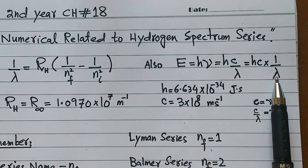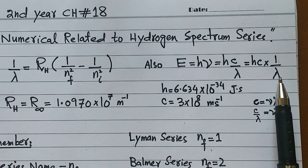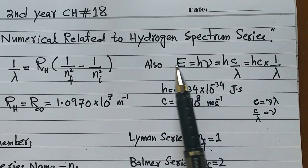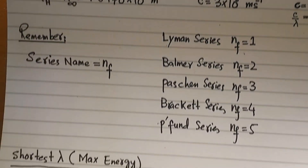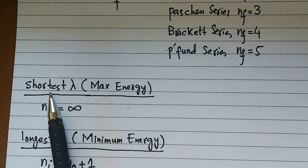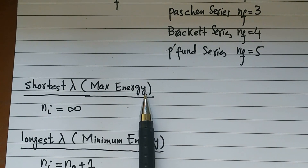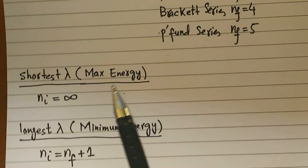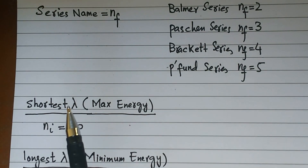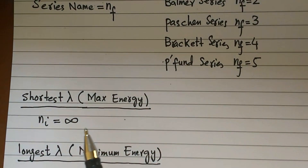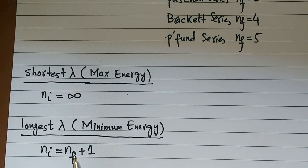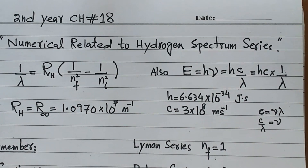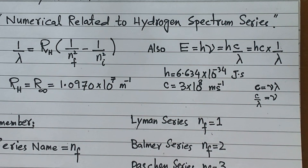From the equation, energy and wavelength have an inverse relationship since lambda is in the denominator. So if the wavelength is shortest, energy is maximum; if the wavelength is longest, energy is minimum. Sometimes instead of asking for the shortest wavelength, the question asks for maximum energy — it is the same thing. For maximum energy, use the condition NI equals infinity; for minimum energy, use the condition NI equals NF plus one.